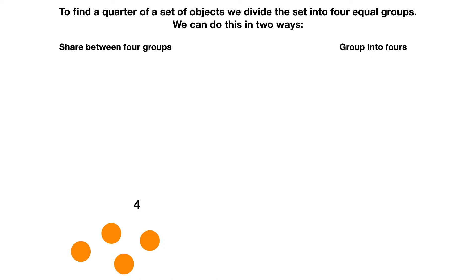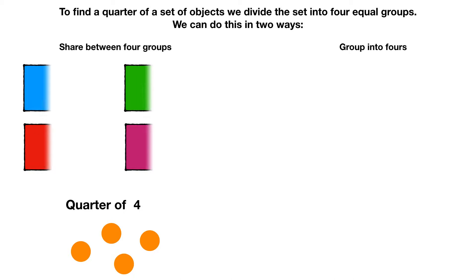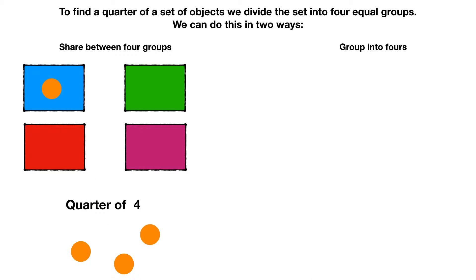We have four circles. We want to find out how many circles would be a quarter of four. We move the circles one at a time into the boxes to share them equally between the four boxes like this. Now we count how many are in one box. We have one in the blue box, so a quarter of four is one.